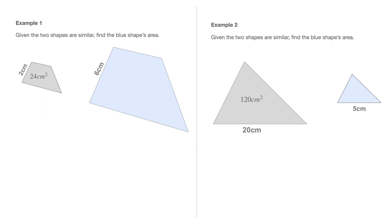In example 1, we're told: given the two shapes are similar, find the blue shape's area. That's this blue quadrilateral here, which is similar to the grey quadrilateral. Looking at these two similar shapes, it's worth pointing out that we have the values of two corresponding side lengths. In this smaller shape, that side length is 2cm, and its corresponding side length in the bigger shape is 6cm long. We don't have enough information about the blue shape to calculate the area without using the grey one.